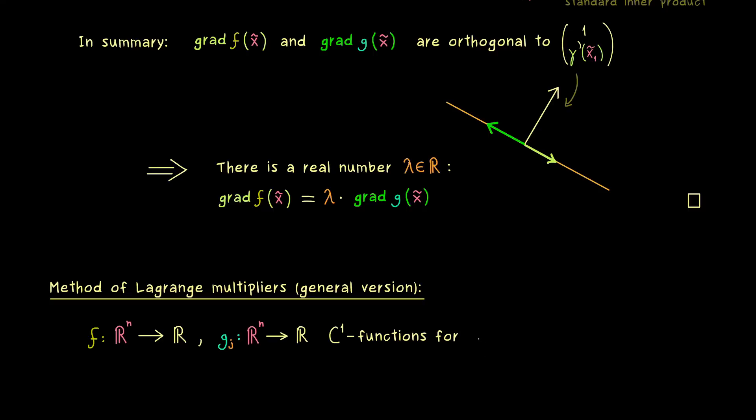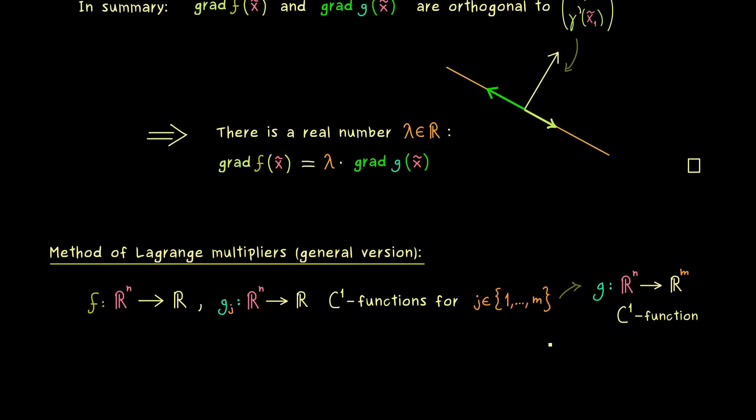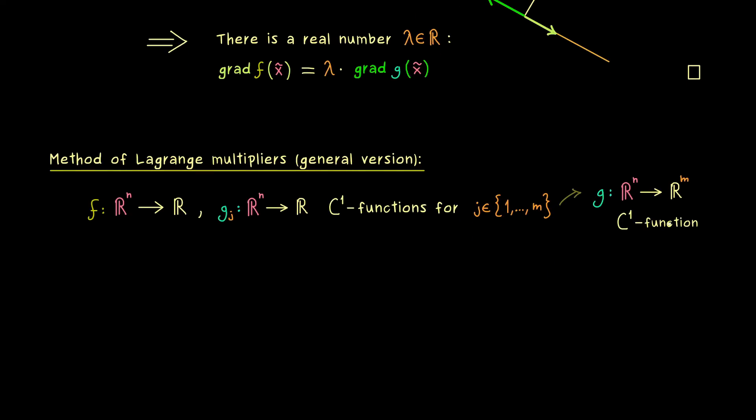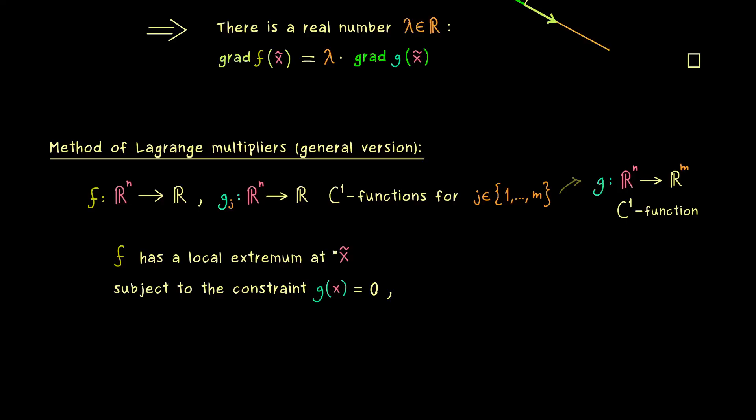So we could say that we have m different functions gⱼ. So the index j here runs from 1 to m. So in short we could just say that we have one C¹ function g that maps into Rᵐ. Indeed if we do that we can still say that our constraint is given by g = 0. The only difference then is that this 0 denotes the 0 vector in Rᵐ. So again here when we say that f has a local extremum subject to the constraint g = 0 means that we have m different constraints.